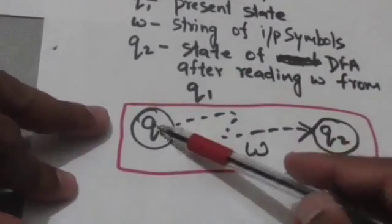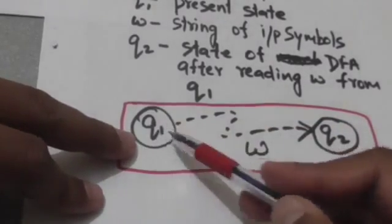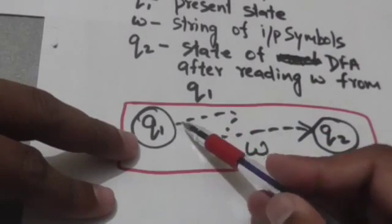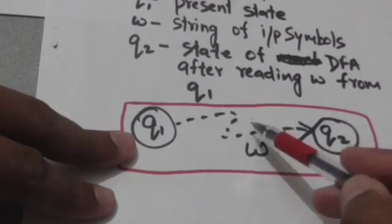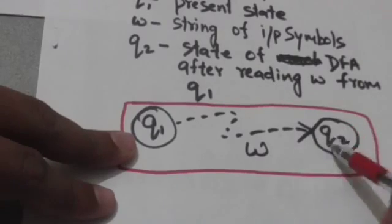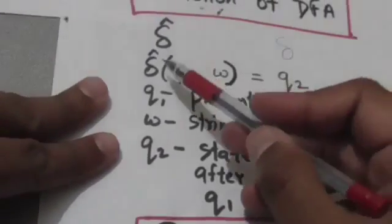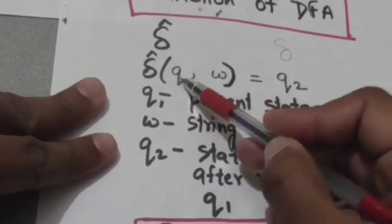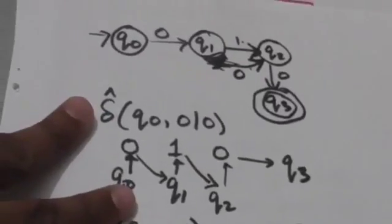If the present state of the machine is q1 and it reads a string of input symbols w, and after reading this string it comes to state q2, then this can be described as: delta cap(q1, w) = q2.